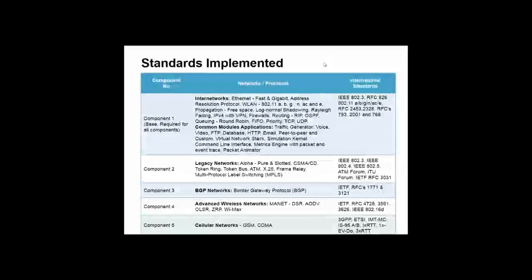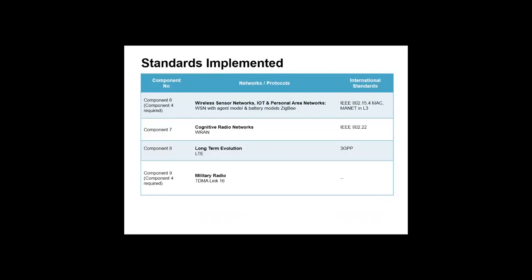Component one consists of protocols implemented in WAN, LAN, and wireless LAN, like Ethernet, 802.11a/b/g/n, and AC. Component two consists of networks based on legacy technologies. Component three is based on BGP networks. Component four contains mobile ad hoc networks and WiMAX technologies, while cellular networks GSM and CDMA are in component five. Component six contains wireless sensor network and personal area network along with IoT. Component seven contains cognitive radio network. Component eight contains LTE. Component nine contains military radio, provided only to enterprise customers.